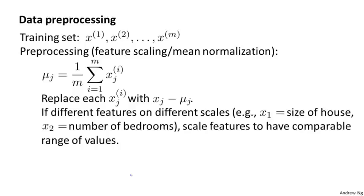Before applying PCA, there's a data pre-processing step which you should always take. Given a training set of m unlabeled examples, it's important to always perform mean normalization, and then depending on your data, maybe perform feature scaling as well. This is very similar to the mean normalization and feature scaling process that we had for supervised learning.